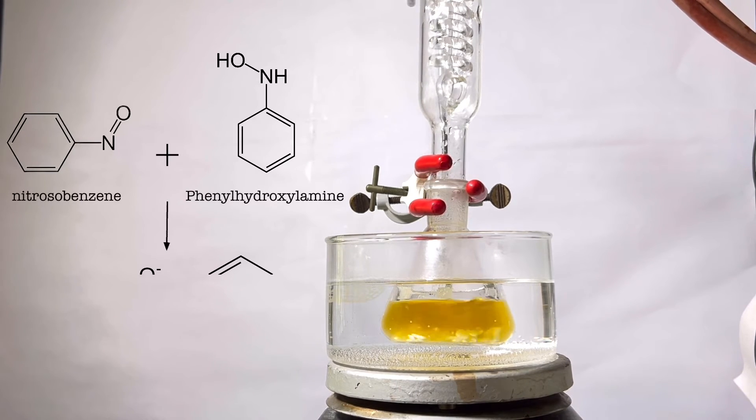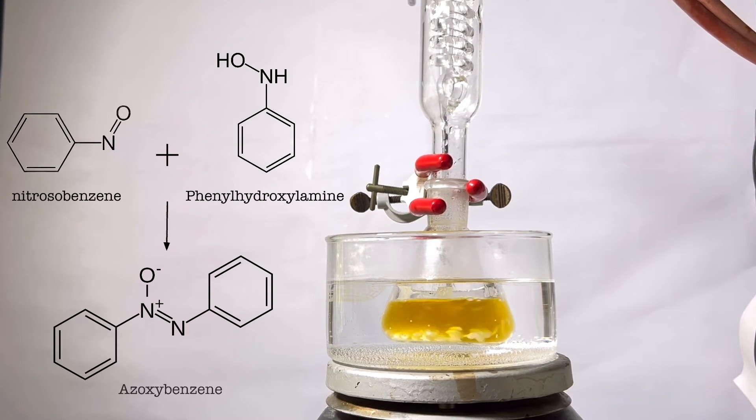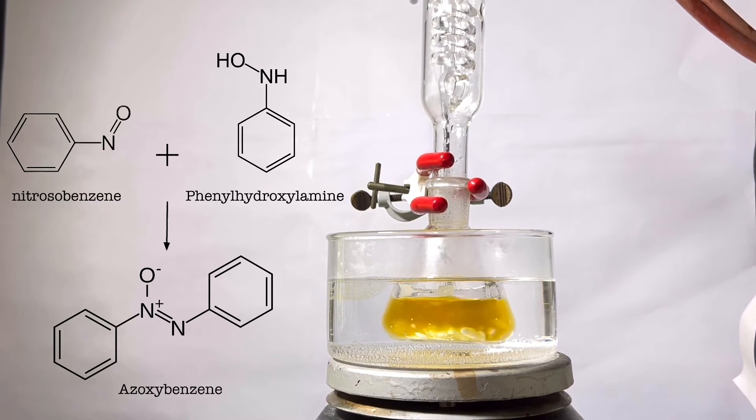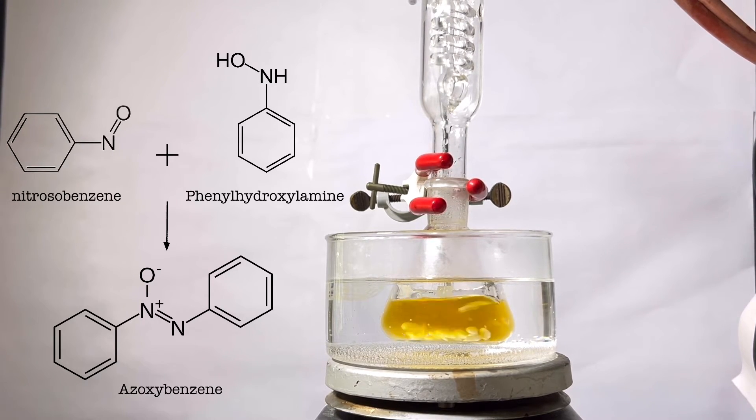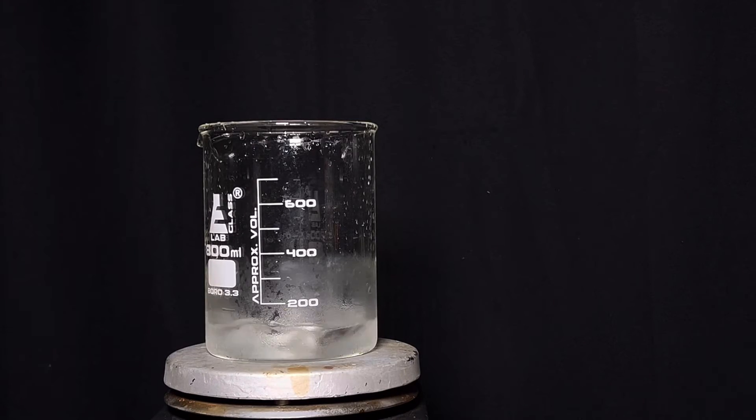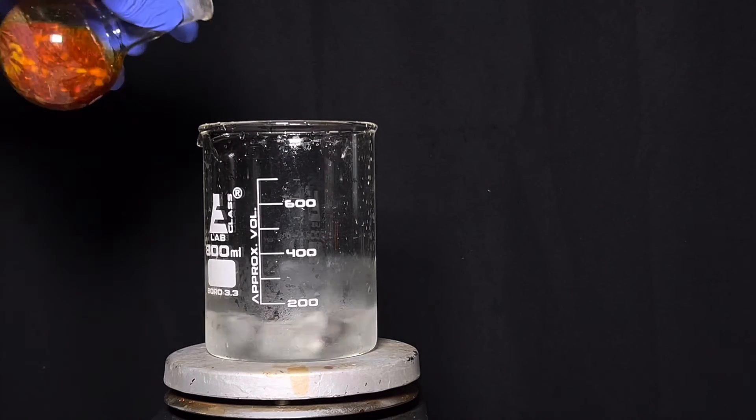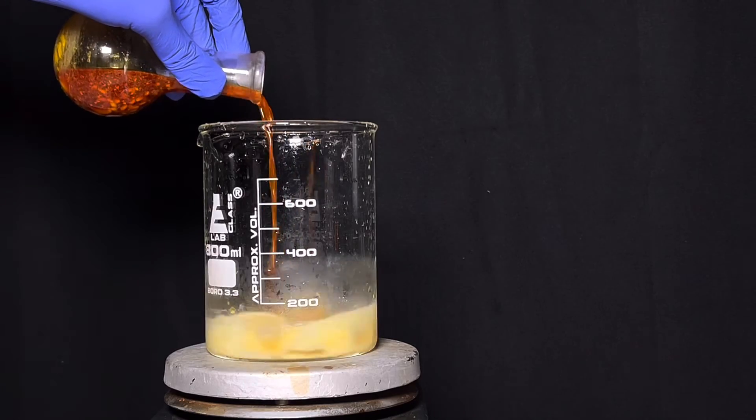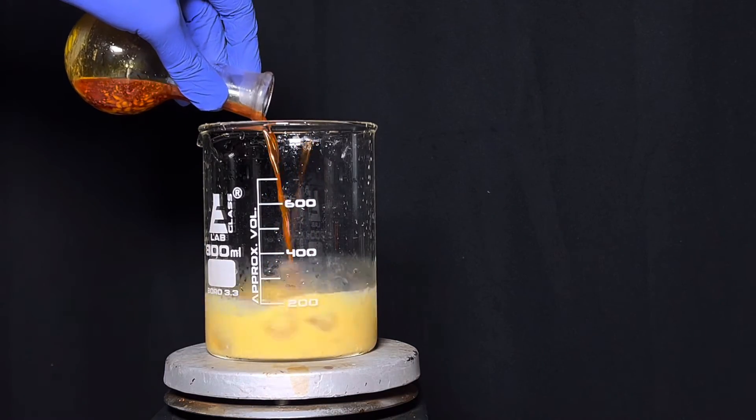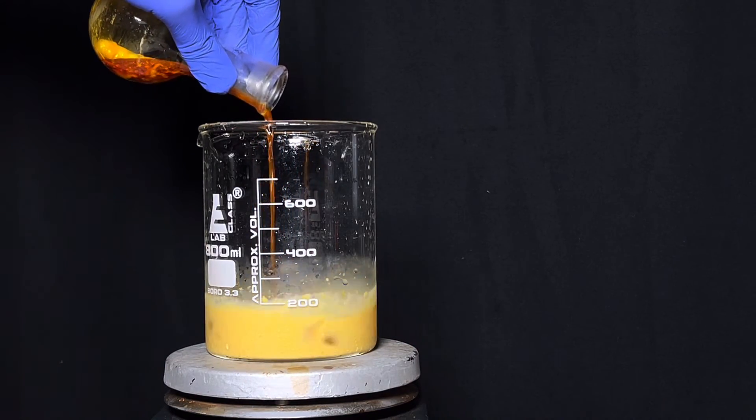After 1.5 hours of reflux, the flask was allowed to cool to room temperature and the contents of the flask were added to around 200 milliliters of ice water. Immediately, the crude product azoxybenzene precipitates out. All the chunks from the flask were added to the water.